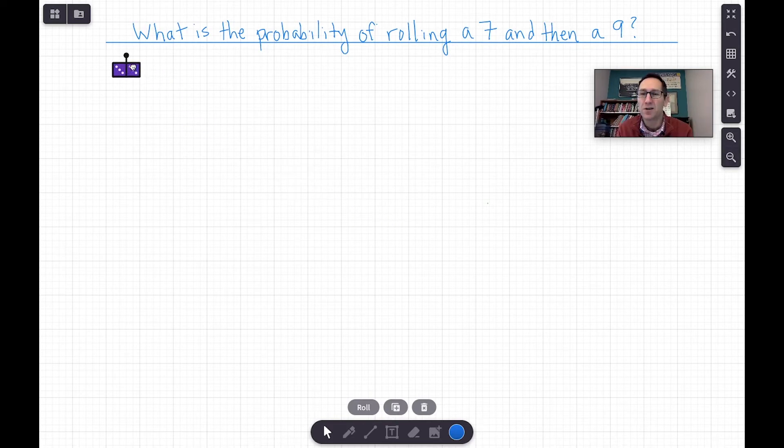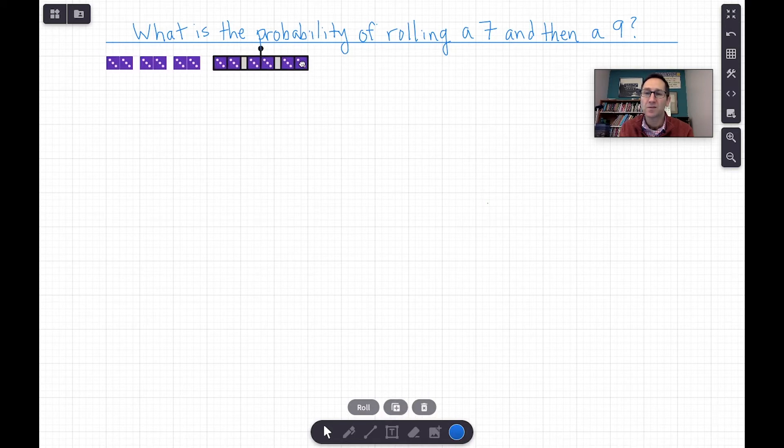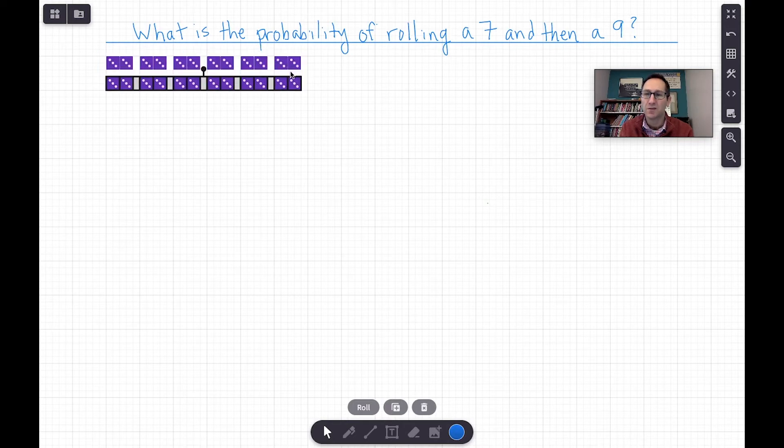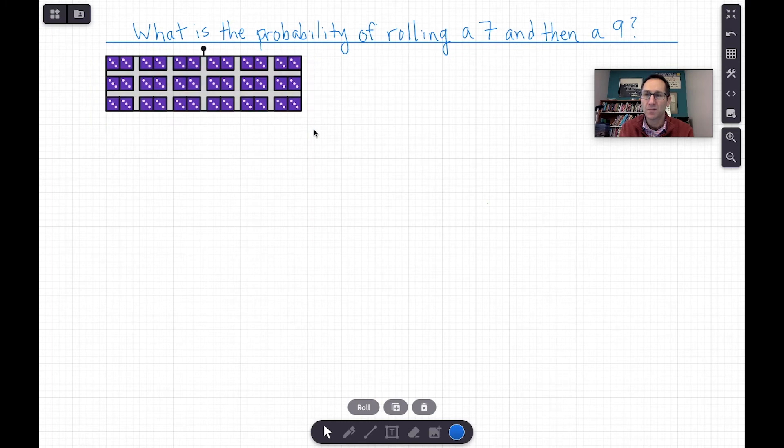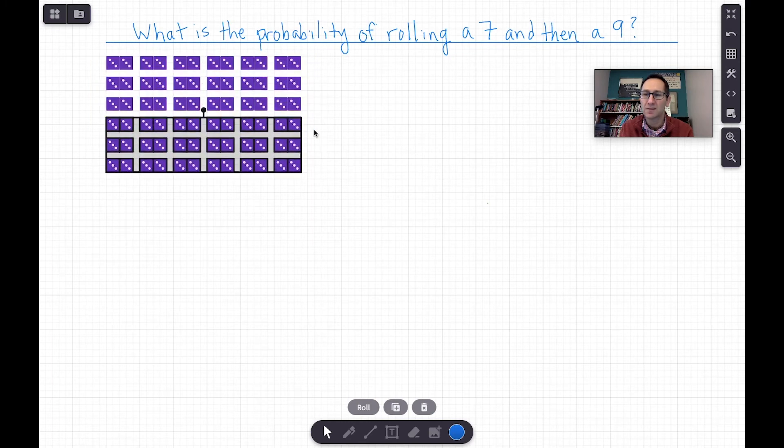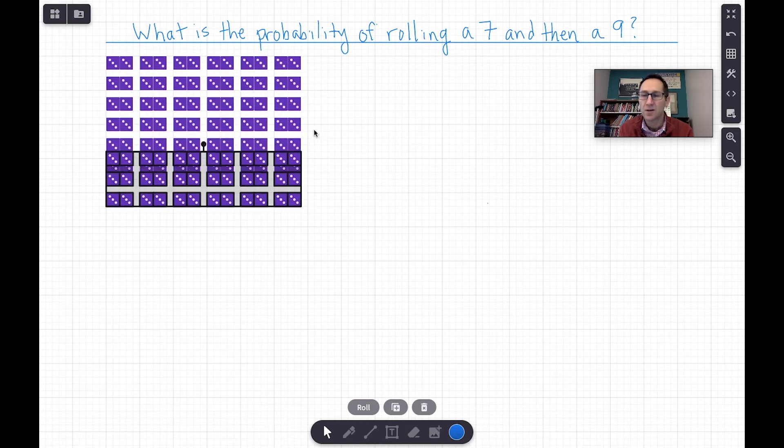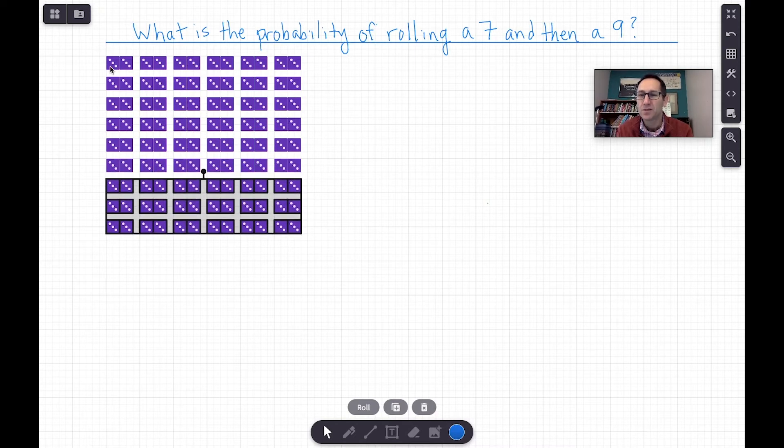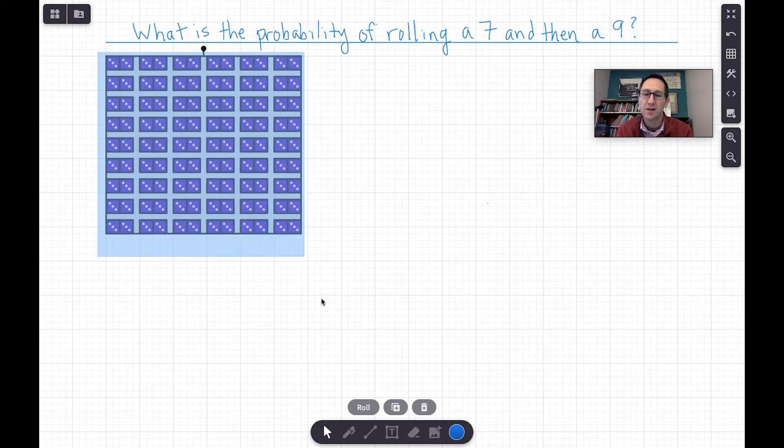But then I want to actually model this in Polypad. So I'm going to create 54 sets of two dice. And what I really like here is how quickly I can make 54 sets of two dice. So there's a set of six. I'm going to copy and use the arrows on my keypad. There's three sets of six. So look how quickly I was able to make 54 sets of two dice.